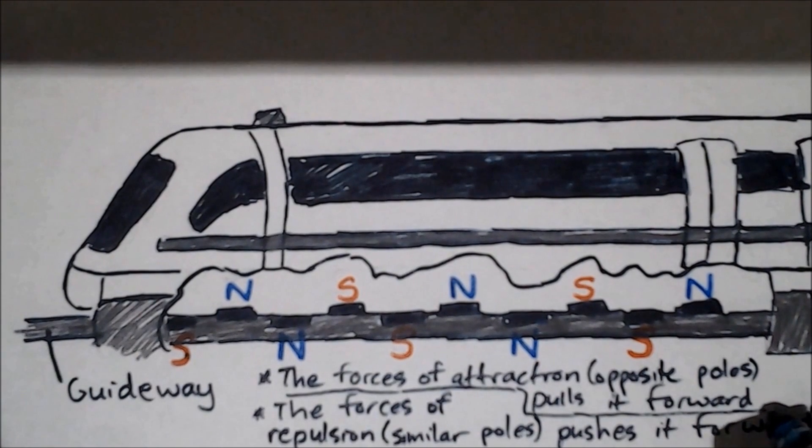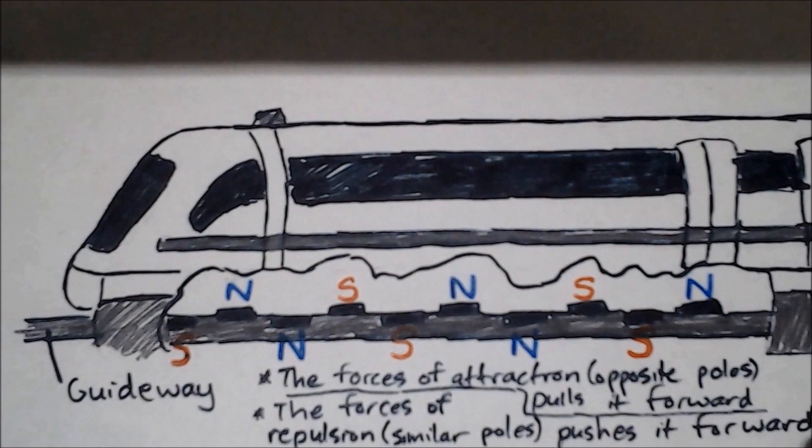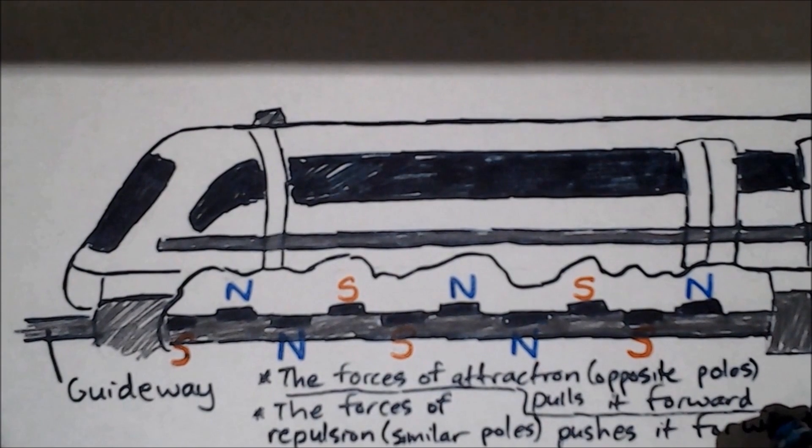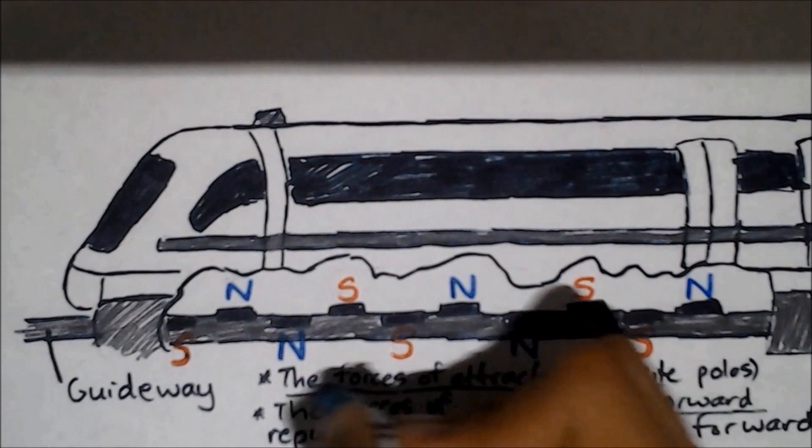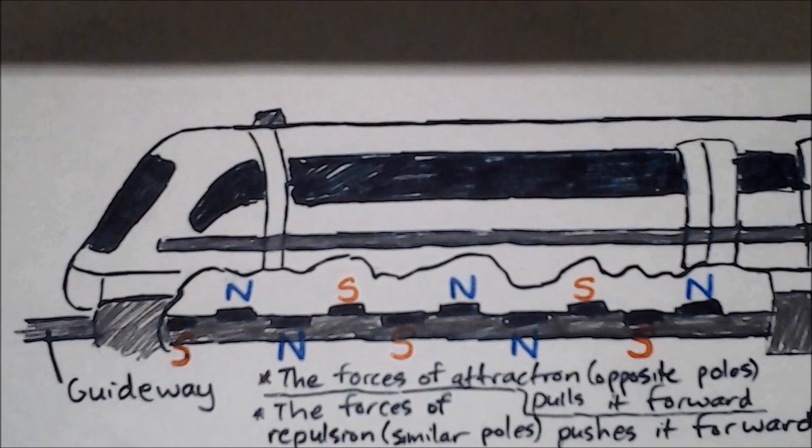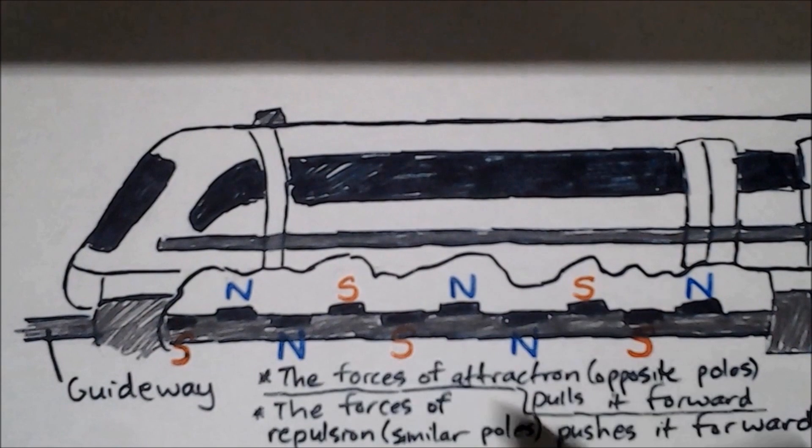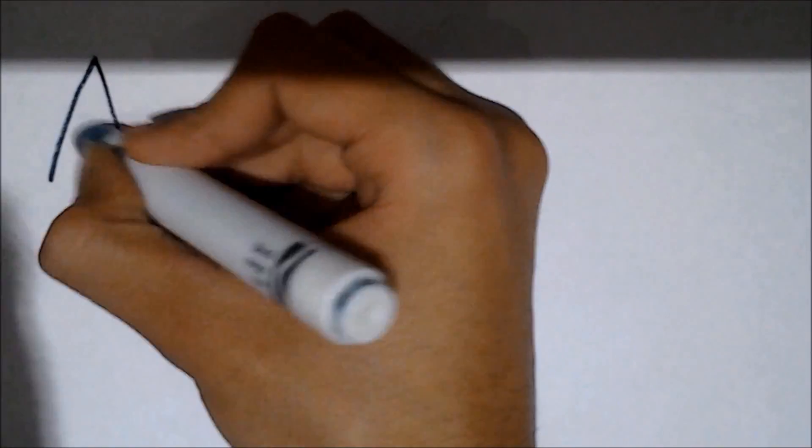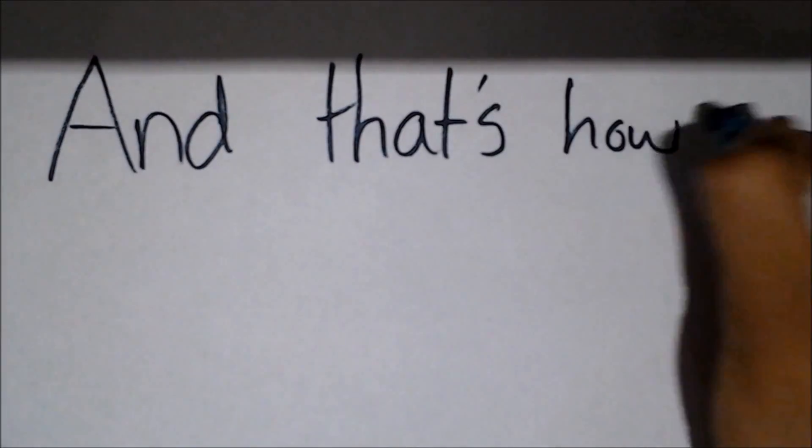The magnets immediately in front of the train use forces of attraction between opposite poles to pull the train forward, while the magnets immediately behind the train use forces of repulsion between similar poles to push the train forward. And that is how a Maglev train works.